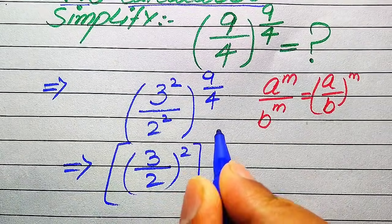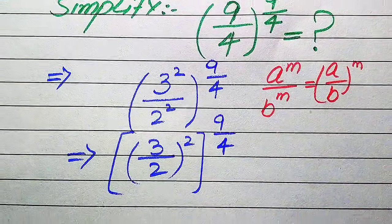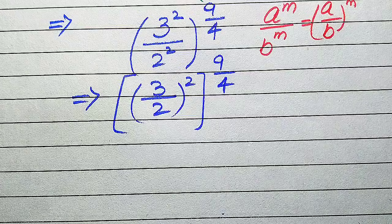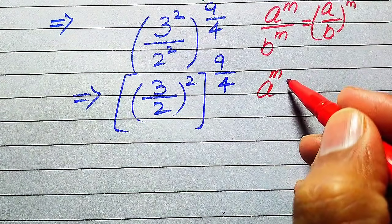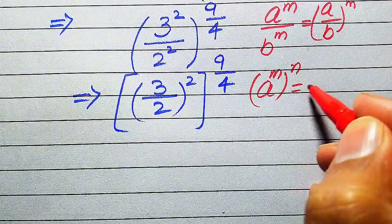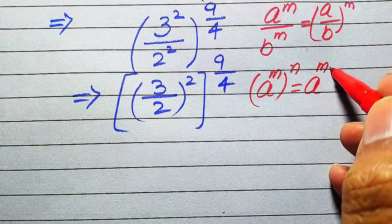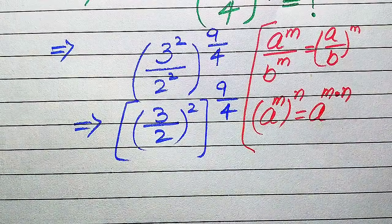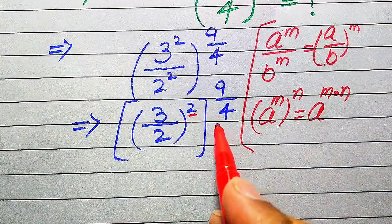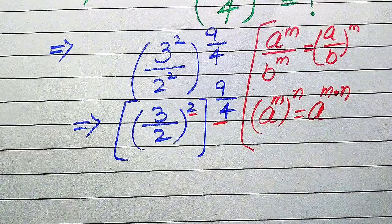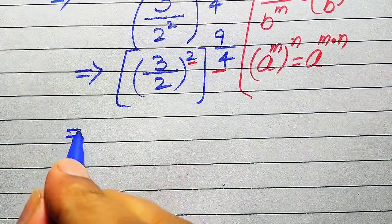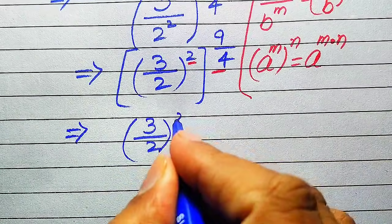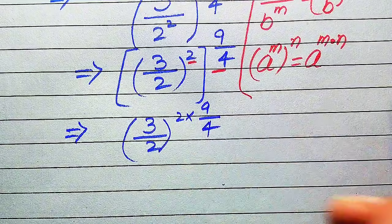In the next step we use another exponential law: if we have a to the power of m, to the power of n, this equals a to the power of m multiplied by n. According to this rule, we multiply the two exponents. We multiply 2 times 9 divided by 4. After applying this rule, it is written as (3 divided by 2) to the power of 2 multiplied by 9, divided by 4.